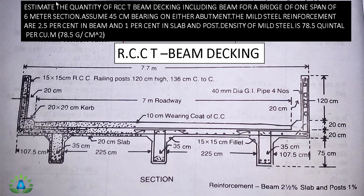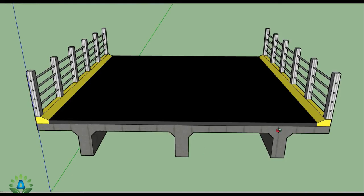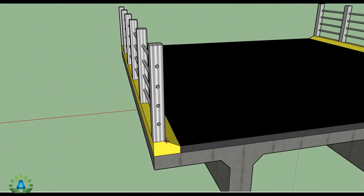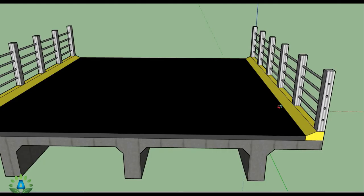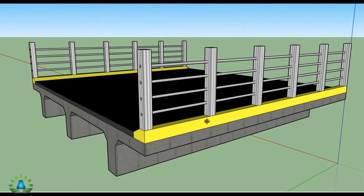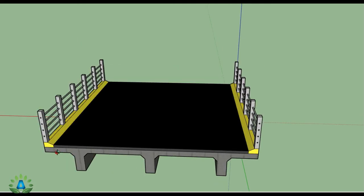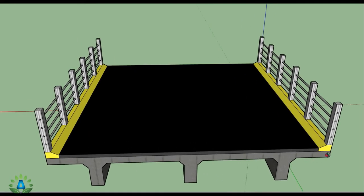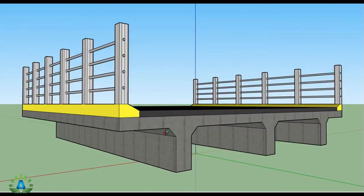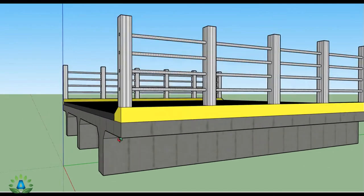Here is a 3D diagram of the T-beam showing the three T-beam ribs, the kerb portions on both sides, the railing posts, and the GI pipes. The roadway is 7 meters from one side to the other. The span is 6 meters, and with the 45 centimeter bearing on both sides, the total length becomes 6.9 meters.